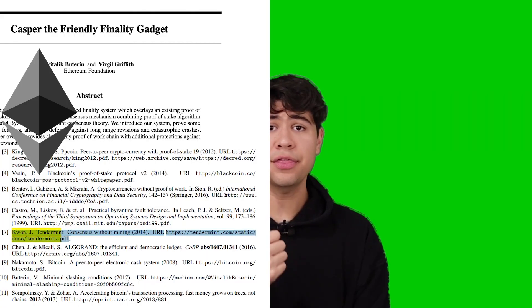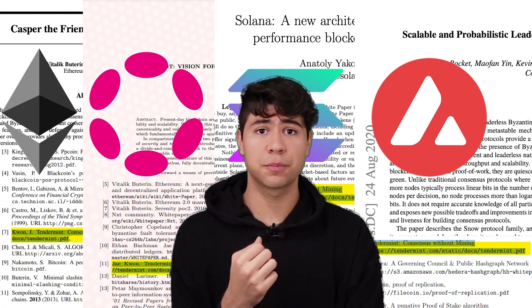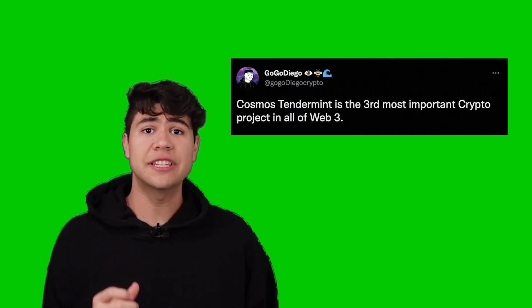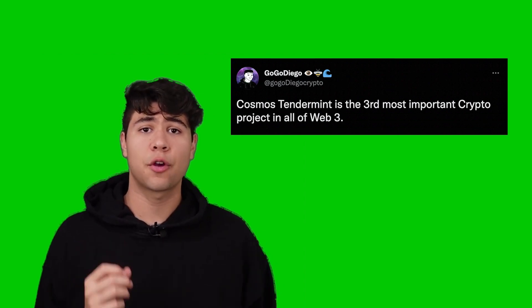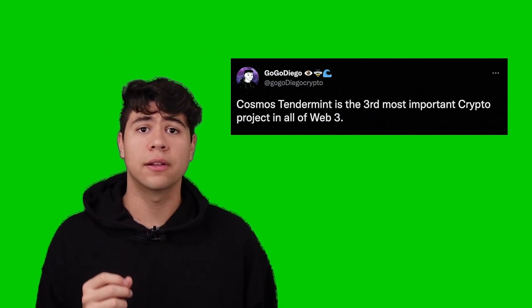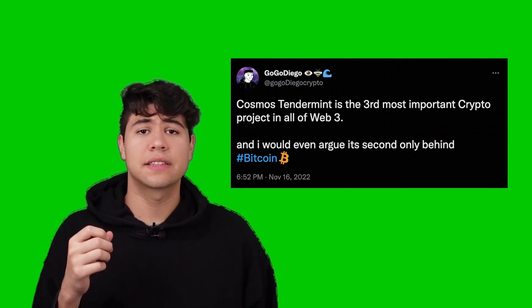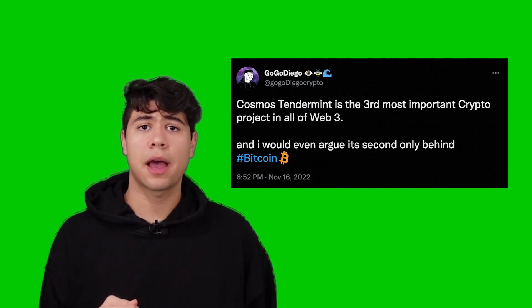Cited by Ethereum, Polkadot, Solana, Avalanche, and so much more, Cosmos's Tendermint is the third most important project in all of Web3. I would argue it's the second most important project only behind Bitcoin. So in this video, we're going to learn about the pioneers of proof-of-stake technology: Tendermint.